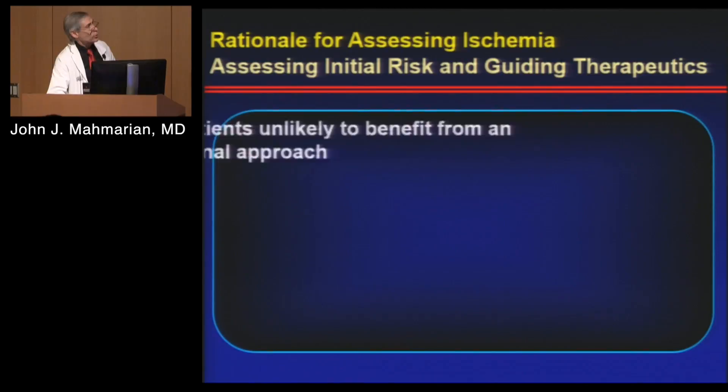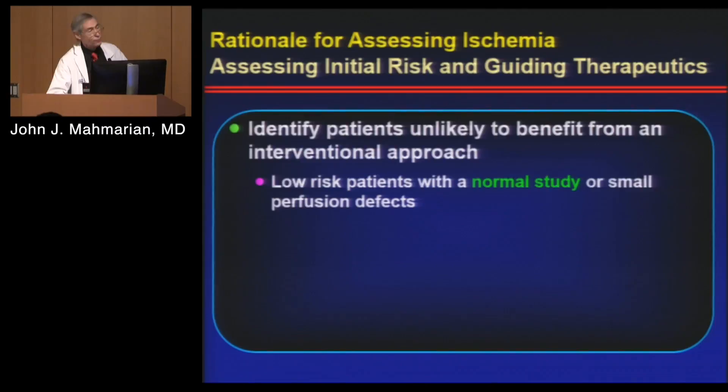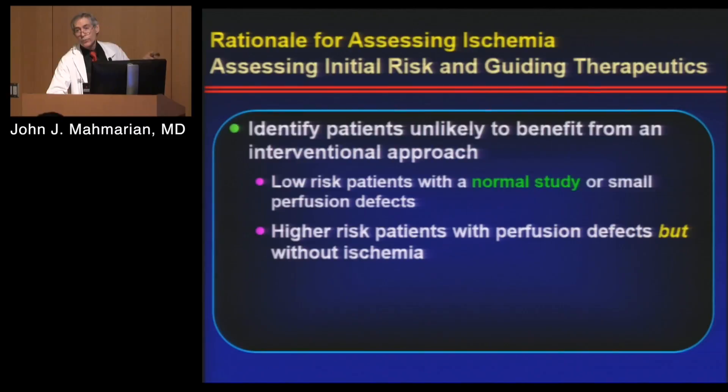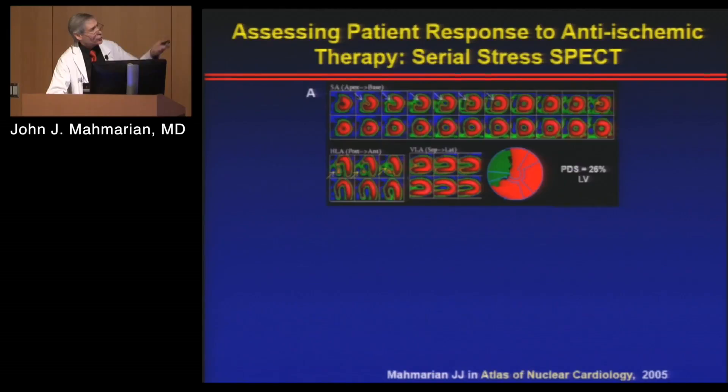Myocardial perfusion imaging as an initial test identifies patients unlikely to benefit from interventional techniques — these would be low-risk patients with normal or relatively normal studies, small defects, or those who are higher risk but have no ischemia. If you don't have ischemia, there's no reason to revascularize. Conversely, we identify high-risk patients with ischemia who require aggressive anti-ischemic medical and interventional therapies — a nice way of dichotomizing groups.